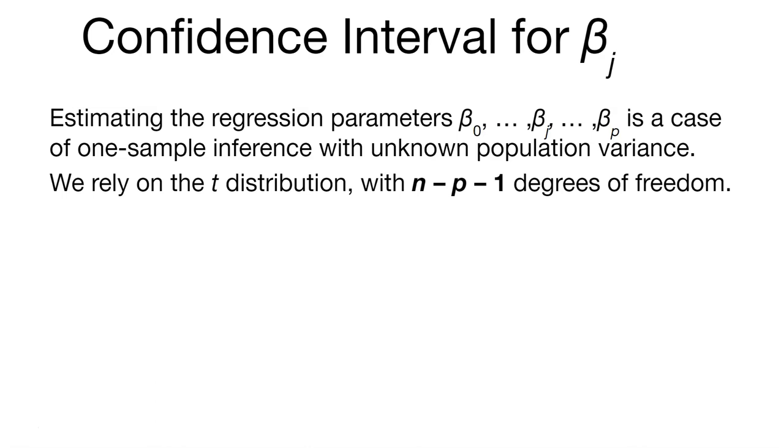We could also calculate a confidence interval for any value, we'll call it beta j. So we're estimating the regression parameters beta 0, beta 1, beta 2, all the way up to beta p.